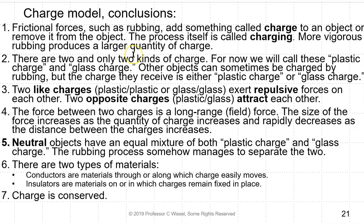Some conclusions: Frictional forces such as rubbing add something called charge to an object or remove it from the object. The process is called charging. More vigorous rubbing produces a larger quantity of charge. There are only two kinds of charge. For now, we will call these plastic charge and glass charge. Other objects can sometimes be charged by rubbing, but the charge they receive is either plastic or glass. Two like charges, plastic to plastic or glass to glass, will exert repulsive forces on each other. Two opposite charges, plastic to glass or glass to plastic, attract each other. The force between charges is a long range field force. The size of the force increases as the quantity of charge increases and rapidly decreases as the distance between the charges increases. Neutral objects have an equal mixture of both plastic charge and glass charge. The rubbing process somehow manages to separate the two. There are two types of materials. Conductors are materials through which charge moves easily. Insulators are materials on or in which charges remain fixed in place. And charges are conserved.